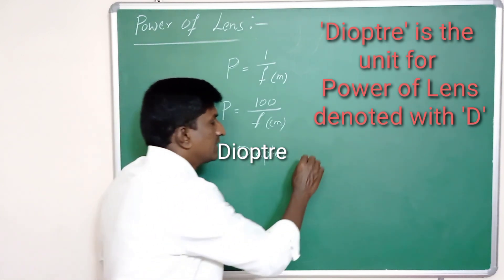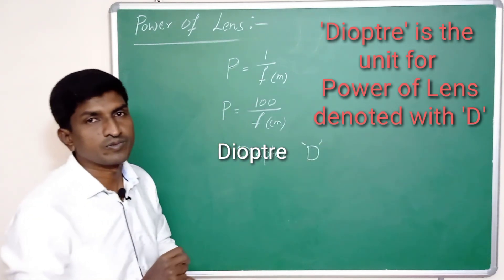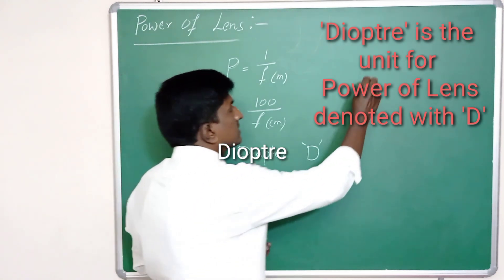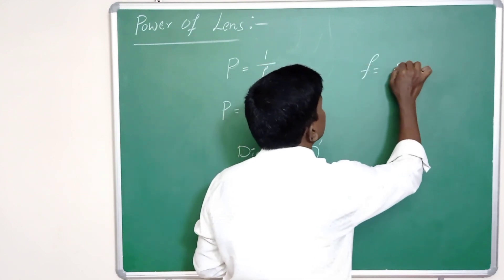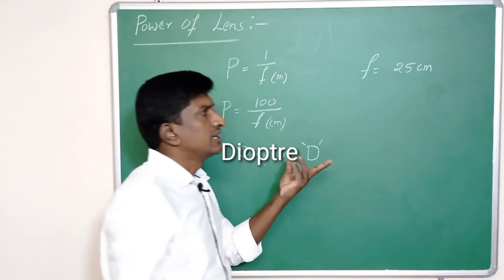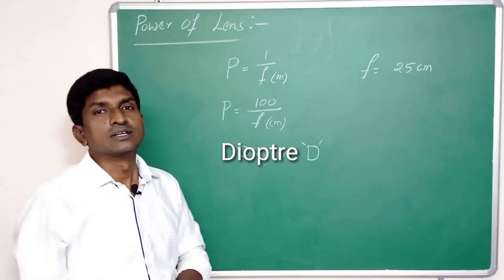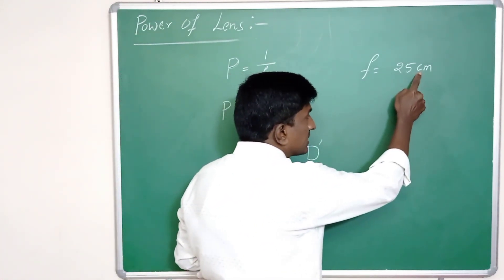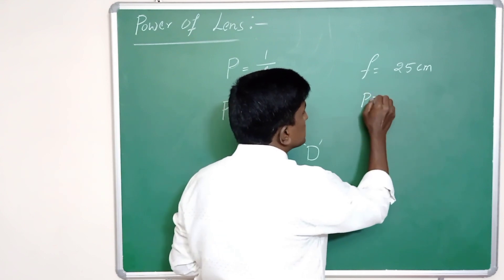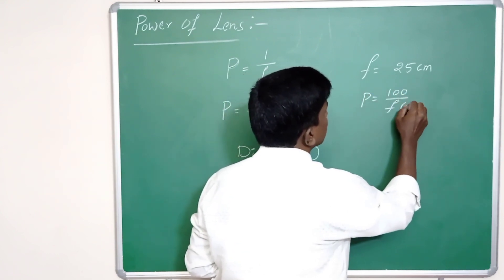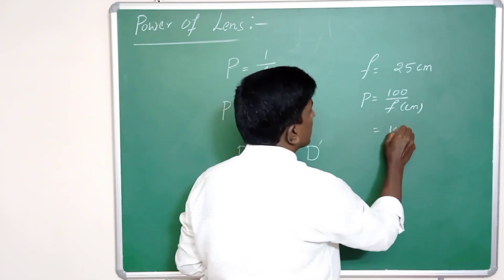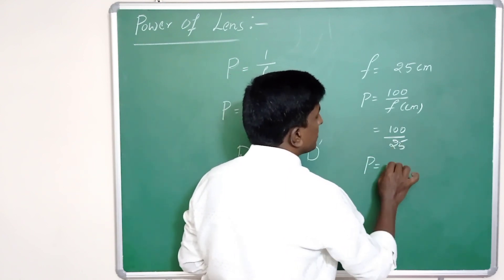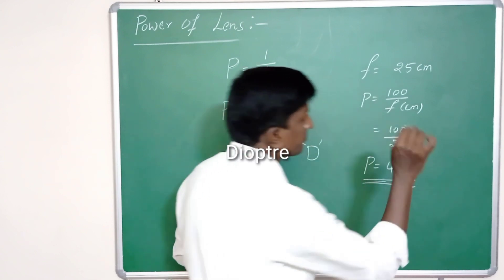For example, a lens having focal length f equal to 25 centimeters. What is the power of lens? We know that when focal length is in centimeters, power of lens is 100 by focal length. So 100 by 25, then power of lens is 4 diopters. In this way we calculate the power of lens and denote it in diopters.